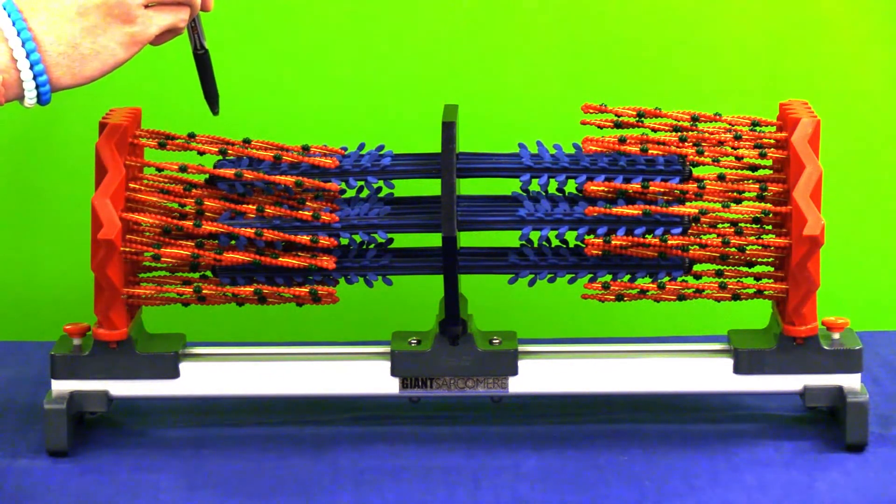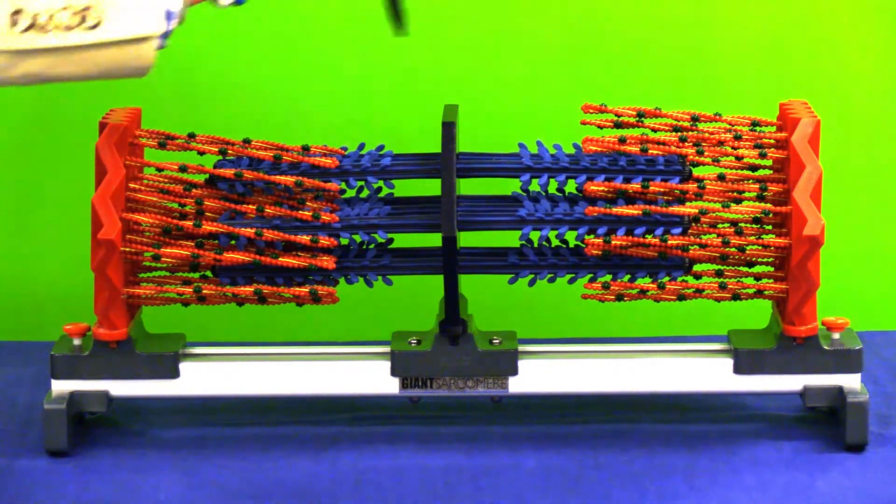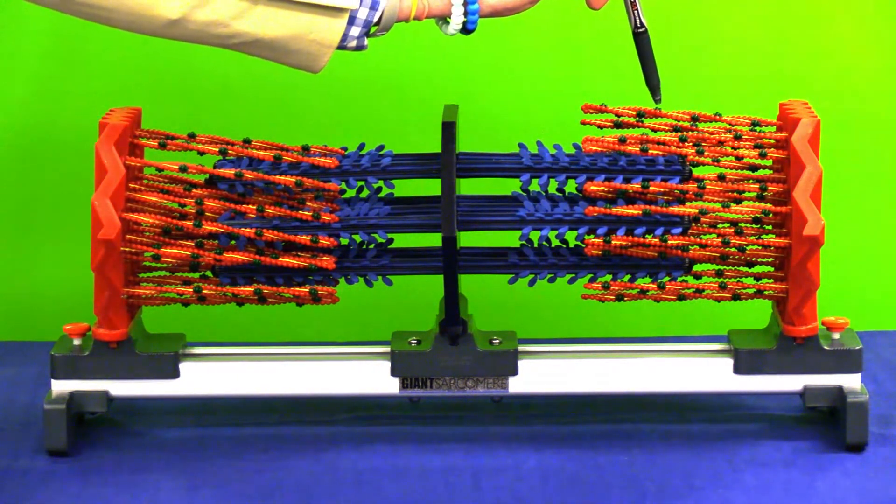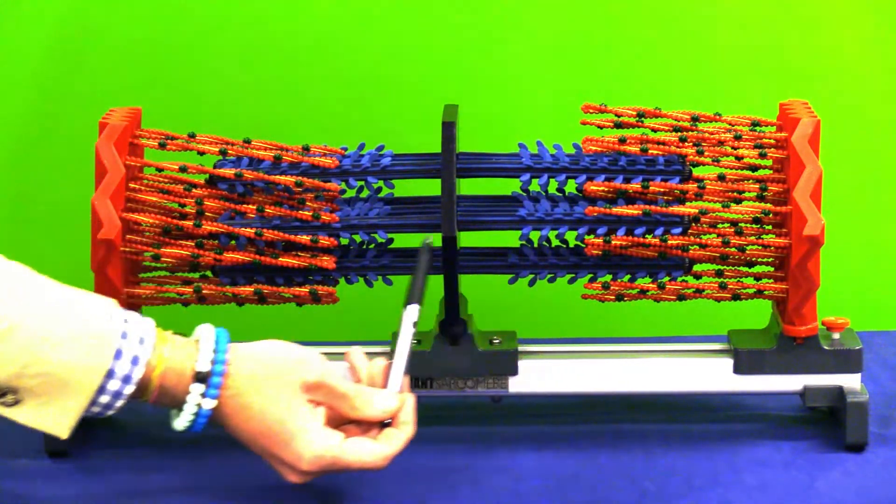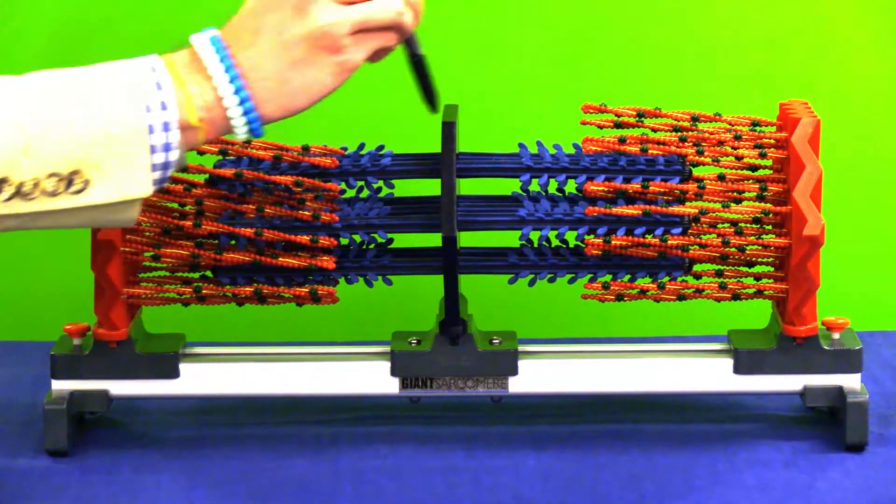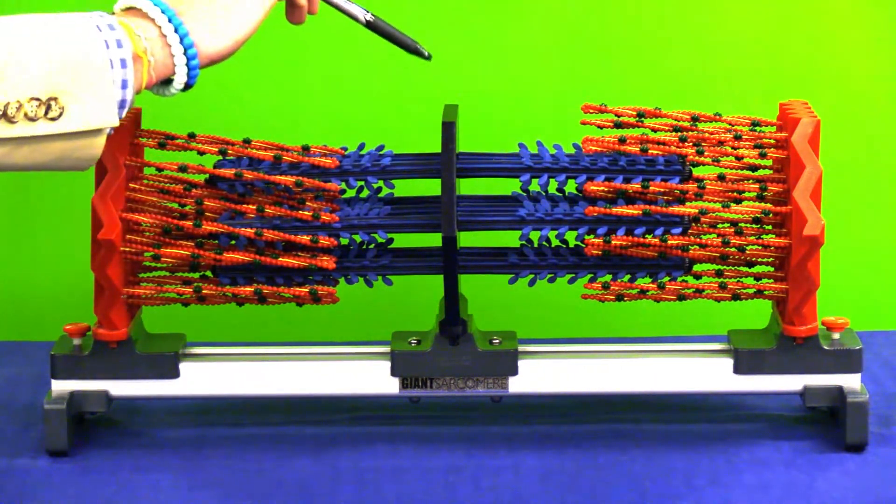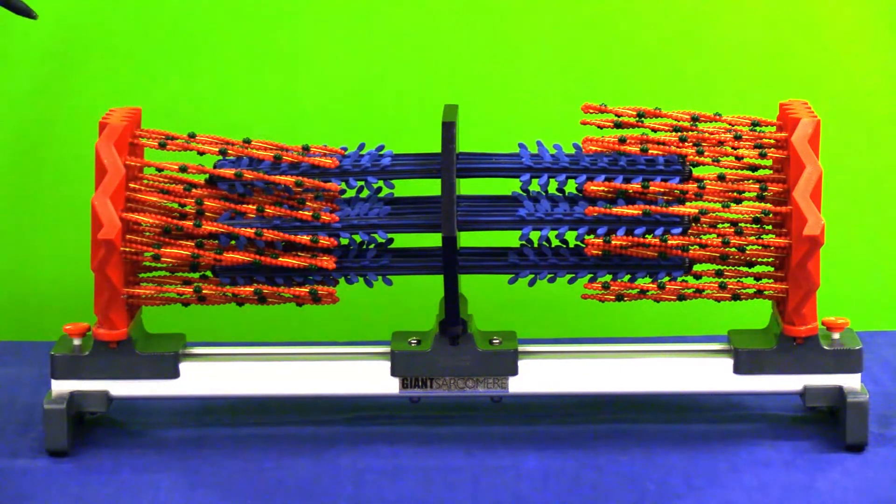As we move further in, there's a region known as the A-band, which goes from the end of the thick filament to the other end of the thick filament. In the middle region, there's an area known as the H-zone, which encompasses just these thick filaments. This portion in the middle is known as the M-line, which divides the sarcomere into equal halves.